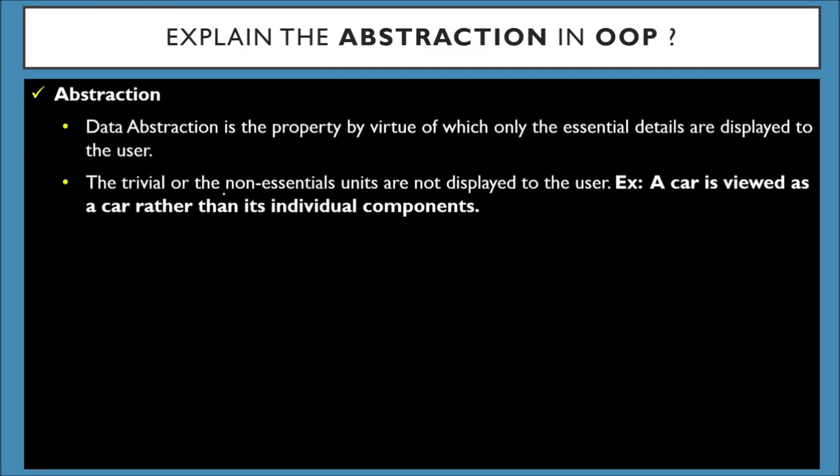What is abstraction? Abstraction, also called data abstraction—in the previous video we saw encapsulation or data encapsulation—data abstraction is the property by virtue of which only essential details are displayed to the user.